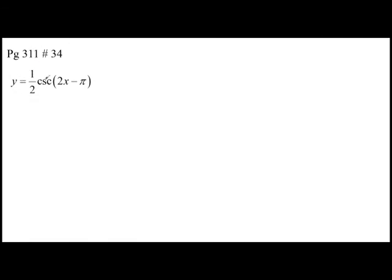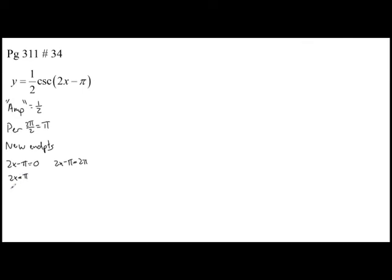Our last example: page 311 number 34 — y equals one half cosecant 2x minus pi. We have a c value that is not equal to zero, so we have an extra step, and there is no amplitude, but we can use one half as a guide. The period is 2 pi divided by 2, which is just pi. There is no vertical shift but there is a horizontal shift, so we need to find new endpoints. Setting 2x minus pi equal to 0 gives 2x equals pi, so x equals pi over 2. Setting 2x minus pi equal to 2 pi gives 2x equals 3 pi, so x equals 3 pi over 2. Those are our two new endpoints. Subtracting: 3 pi over 2 minus pi over 2 is 2 pi over 2, which is pi — so our period is confirmed.